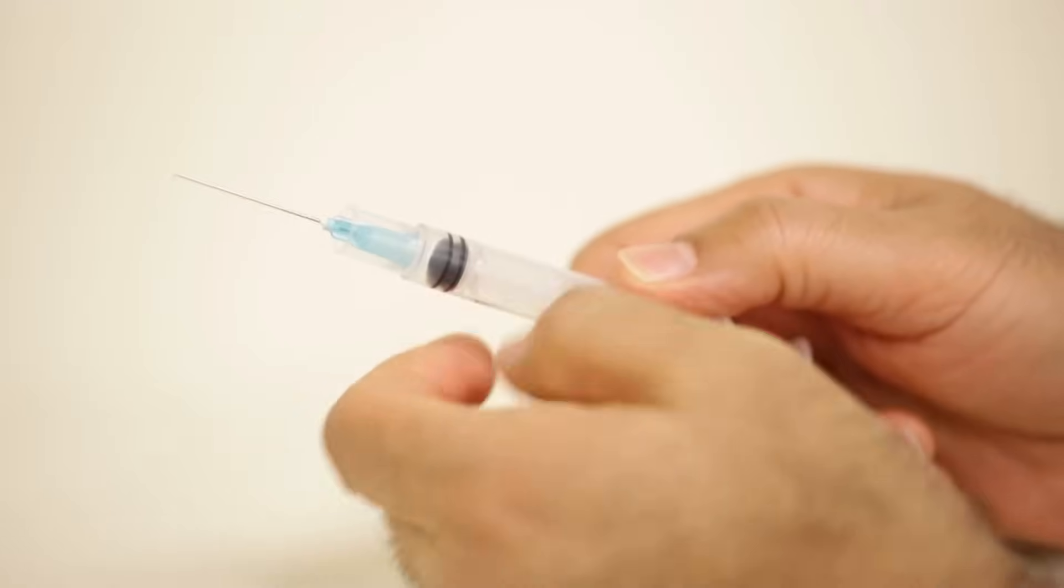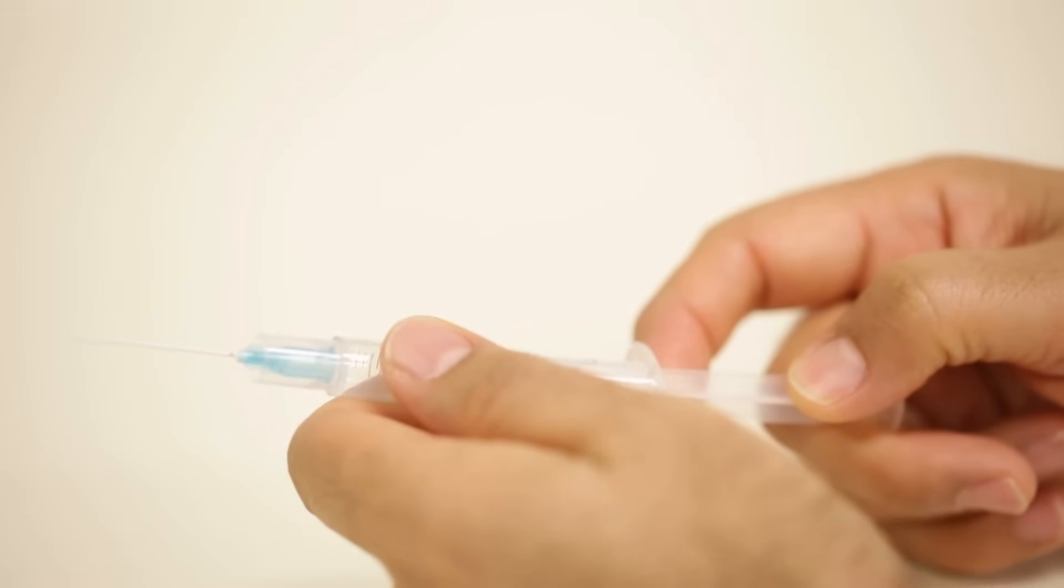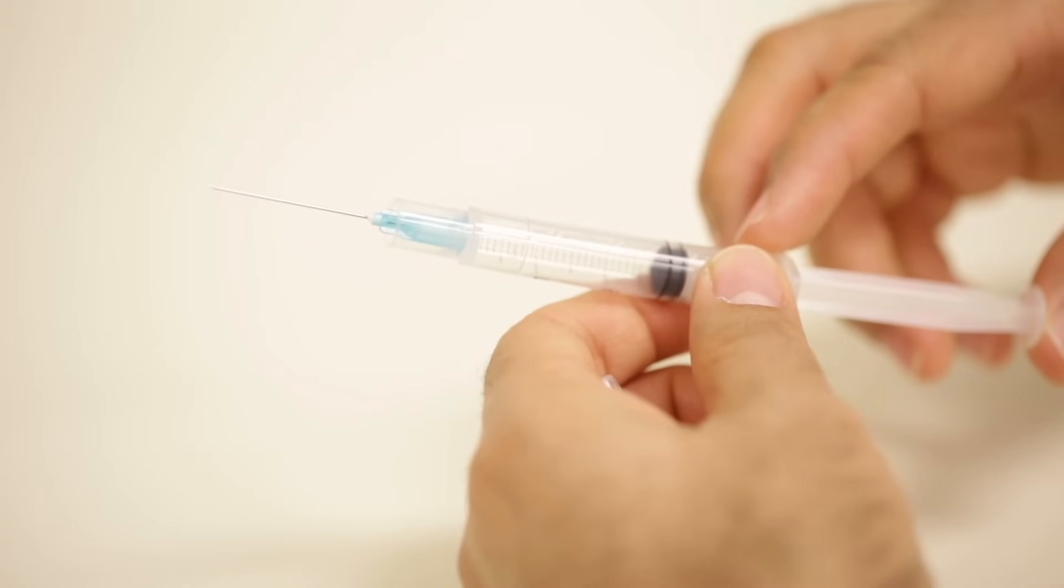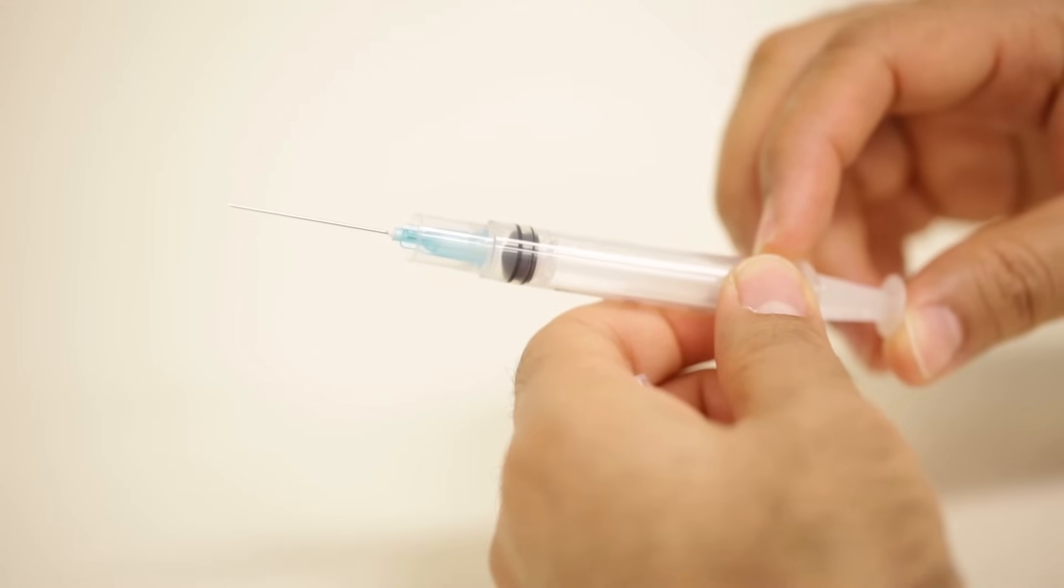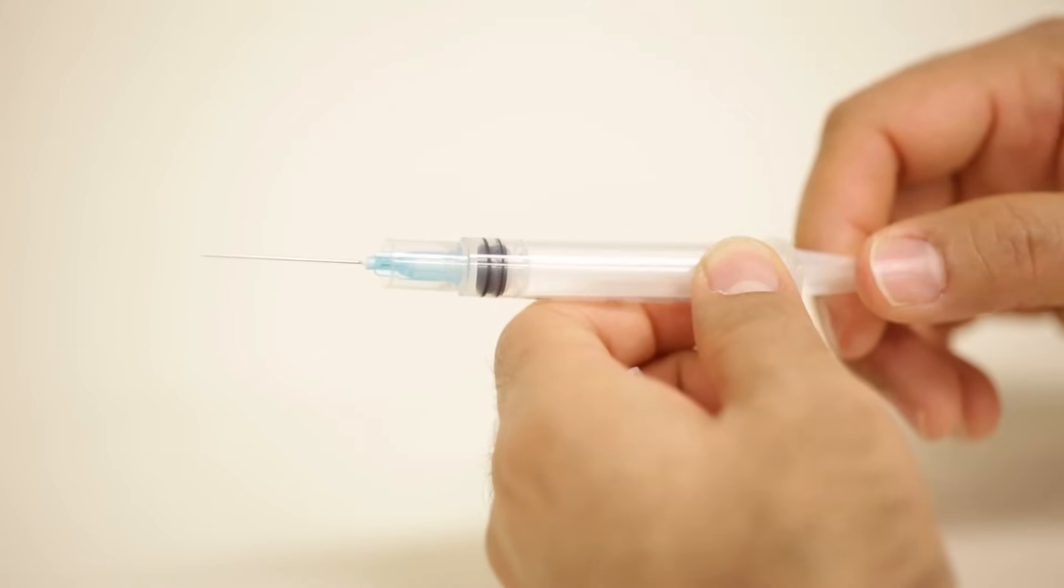This syringe can be used only once. After the injection, continue to push the plunger forward. You will feel a bit of resistance towards the end of the barrel. Continue until the syringe is locked.